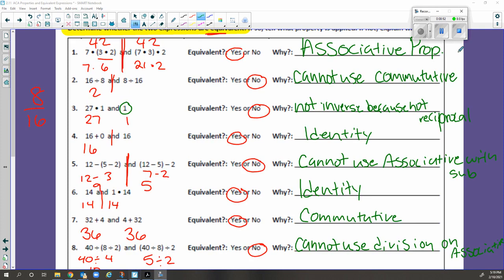All right, guys, let's take a look at our answers. So number 3, I think that it is not going to be equivalent. It's not inverse because it's not reciprocal. How about number 4? 16 plus 0 and 16. Yes, I think those are equivalent and I think it's because of the identity property. Number 5, I do not think they're equivalent because we cannot use the associative property with subtraction.